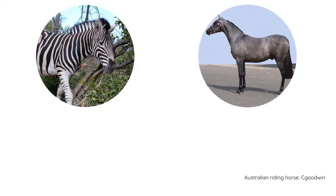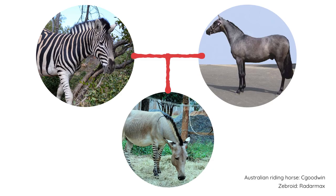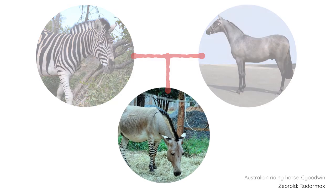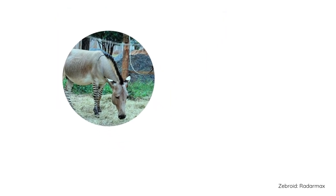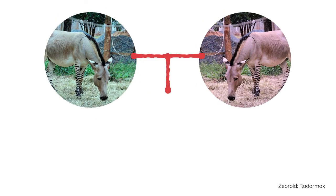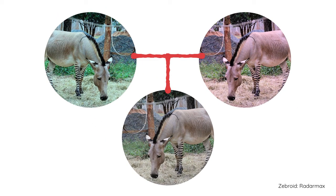A zebra and a horse, for example, can produce offspring. They can produce something called a zebroid. However, the zebroid itself cannot produce offspring — if we were to mate two of these, they would not be able to reproduce.